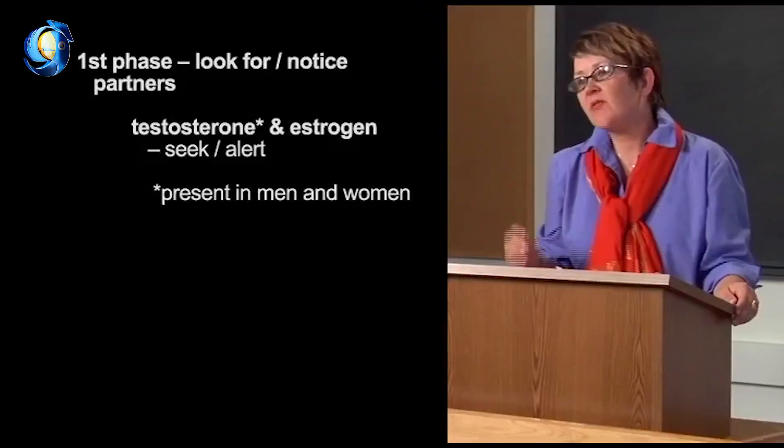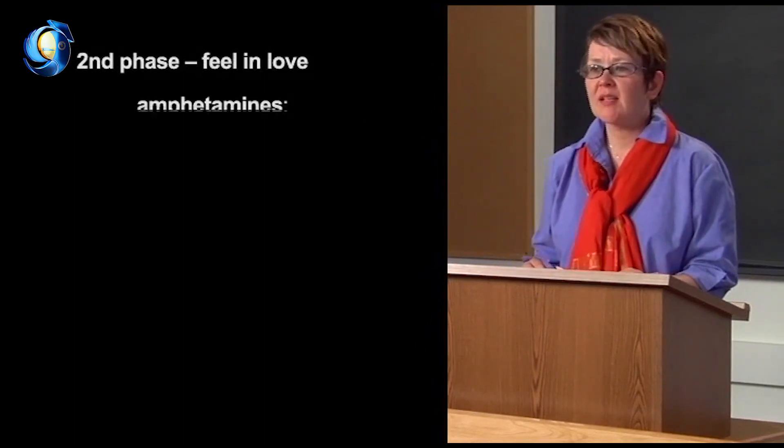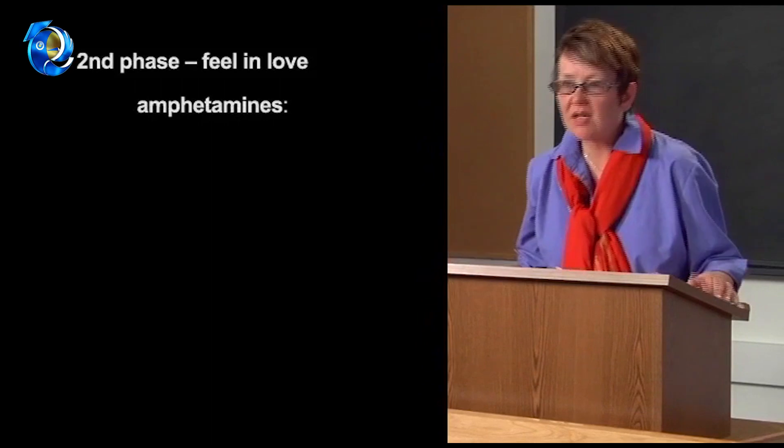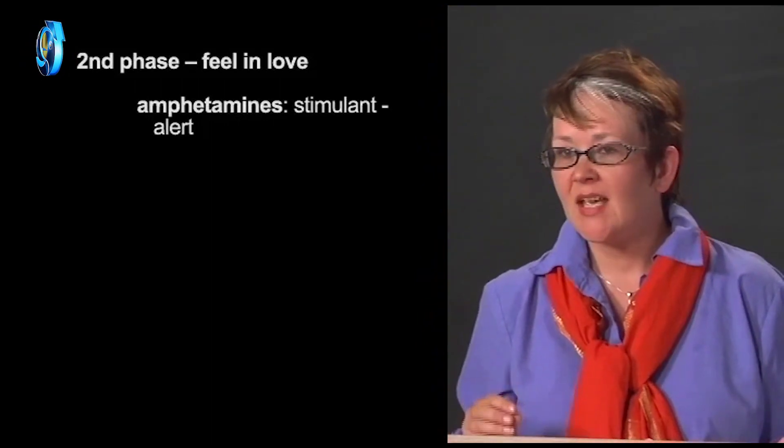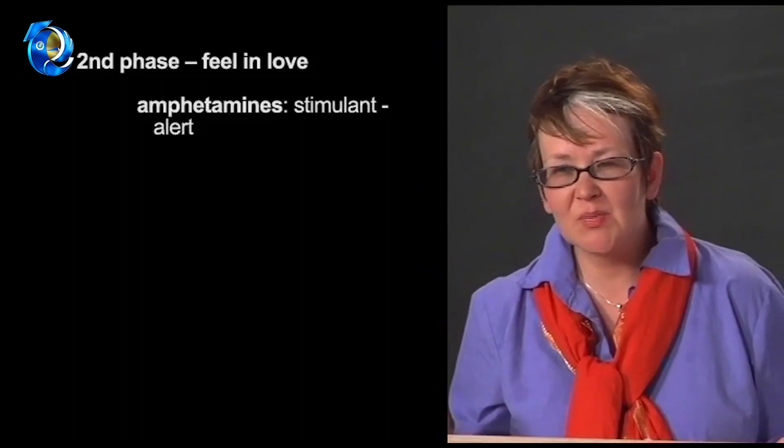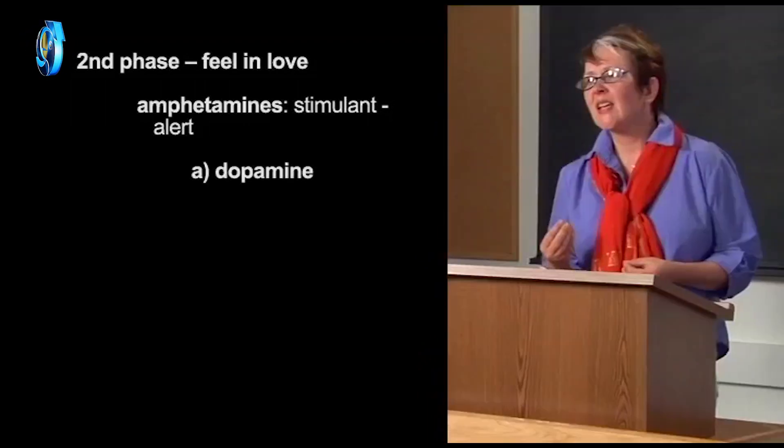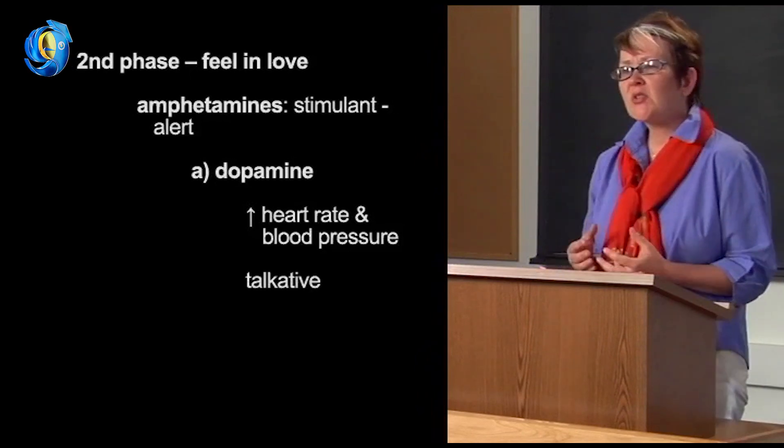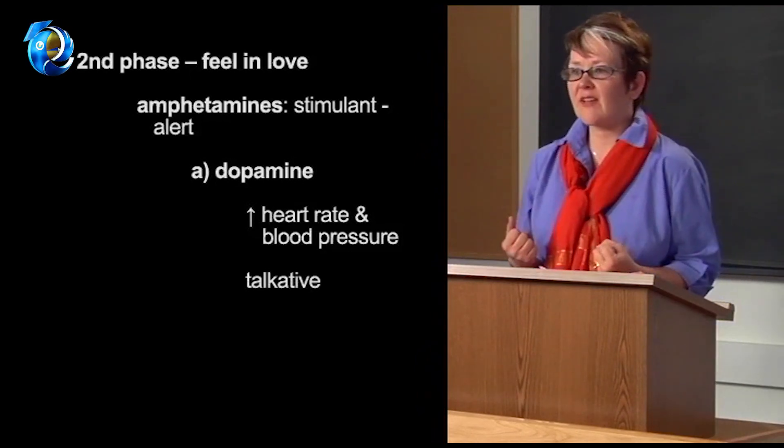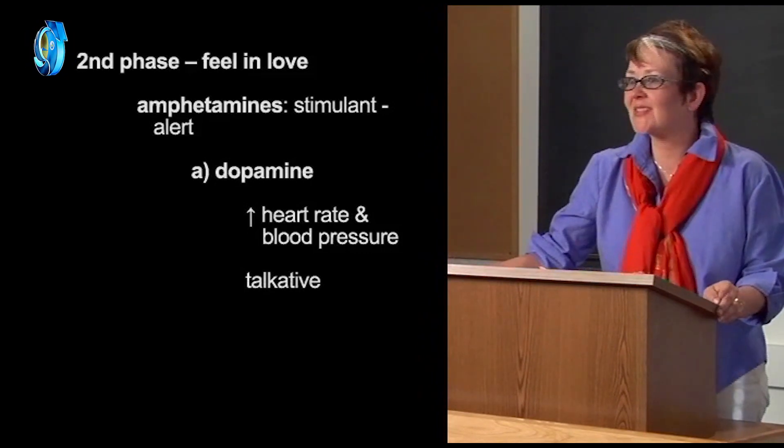It's in the second phase where people have the feeling of being in love. Here, some powerful amphetamines are released into the brain. Amphetamines are a kind of stimulant, right? They make us feel alert. Well, two of these amphetamines are dopamine and phenylethylamine, also known as PEA. Dopamine has a physical effect on our body. It increases our heart rate and blood pressure and seems to make us more talkative. It also has a powerful psychological effect, invoking feelings of pleasure and excitement, and it enhances our emotional responses to things.